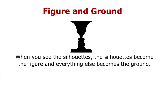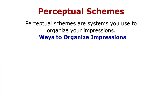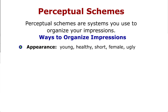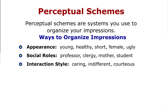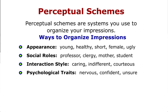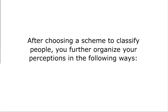And everything else becomes the ground. Perceptual Schemes are systems you use to organize your impressions. The five ways to organize impressions are: Appearance, Social Roles, Interaction Style, Psychological Traits, and Memberships. After choosing a scheme to classify people, you further organize your perceptions in the following ways.